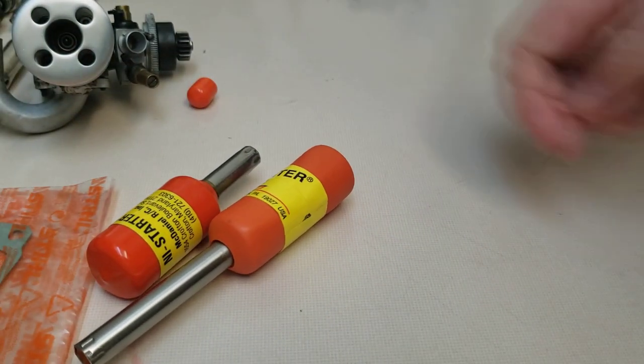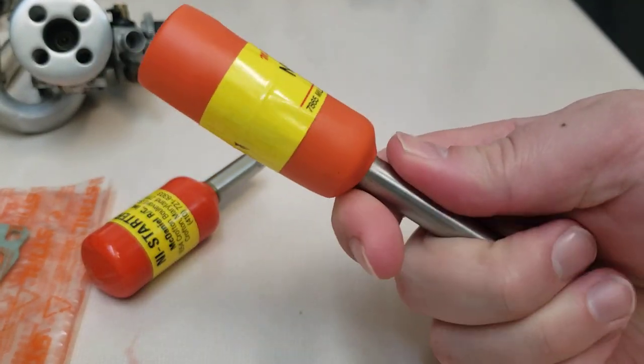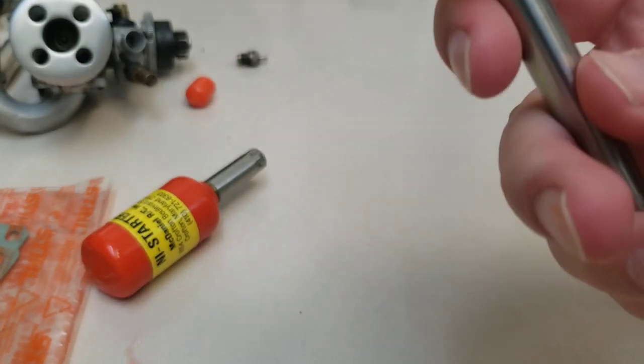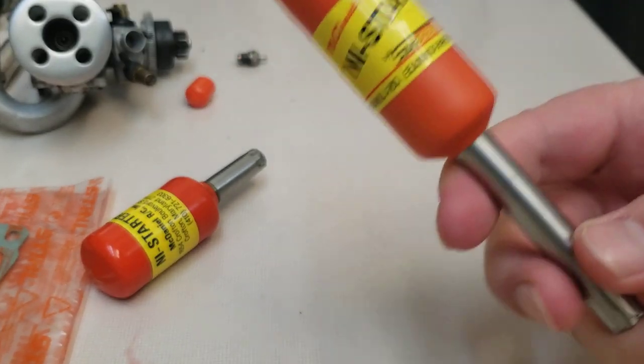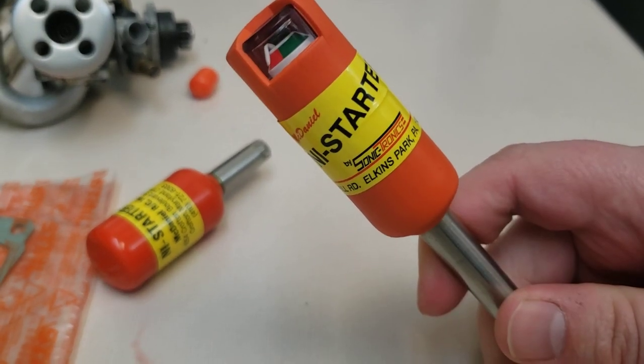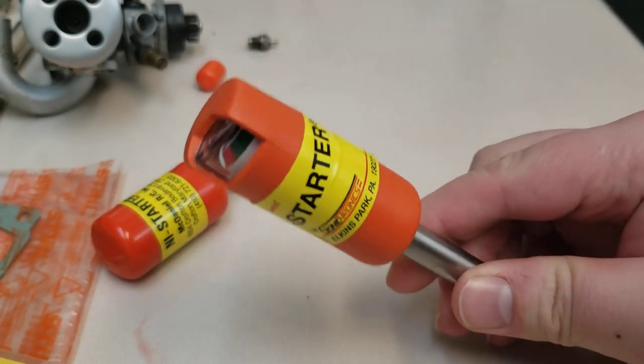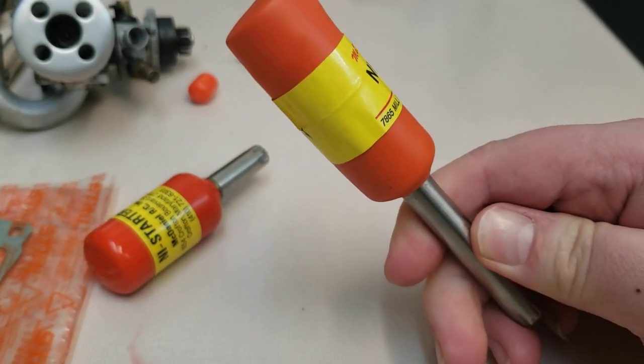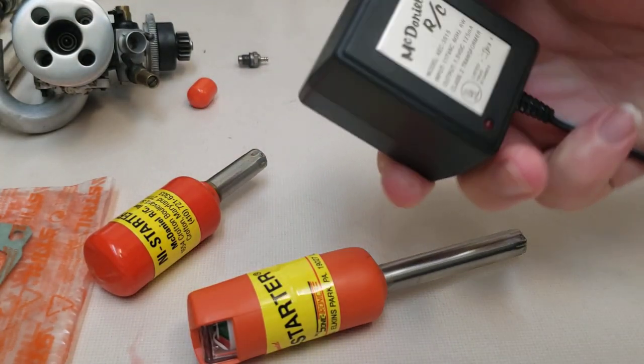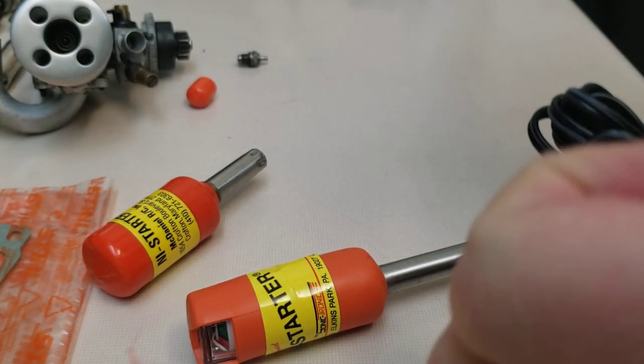I will say that when you do buy these on eBay, they are available with or without the charger. So make sure you do read the description because I did have some comment a while ago about how they ordered one and didn't come with the charger. And this is what the charger looks like. It's just a normal wall wart like this, just a little standard transformer.